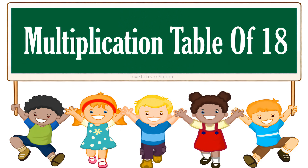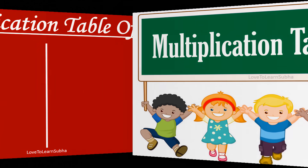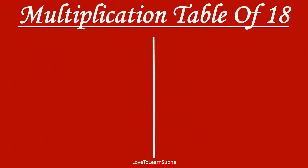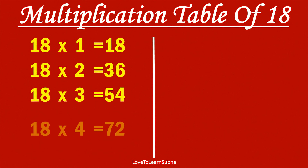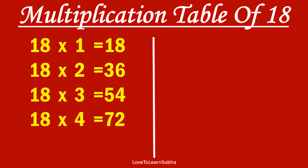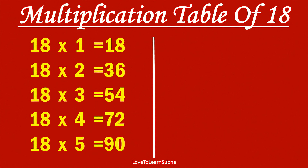Multiplication table of 18. 18×1 is 18, 18×2 is 36, 18×3 is 54, 18×4 is 72, 18×5 is 90.